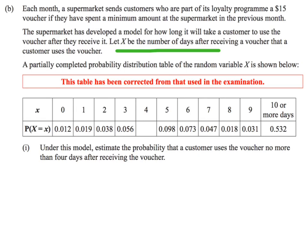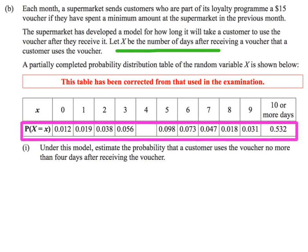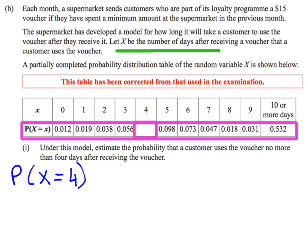The next thing to notice is that there is actually a missing value in the table. If I look at the probabilities, there's a gap in the middle that we need to fill. We know that all of the probabilities have to add up to 1, or 100%. The missing value is the probability that X is equal to 4, so the chance of that occurring is going to be equal to 1 minus all of the other probabilities added up.